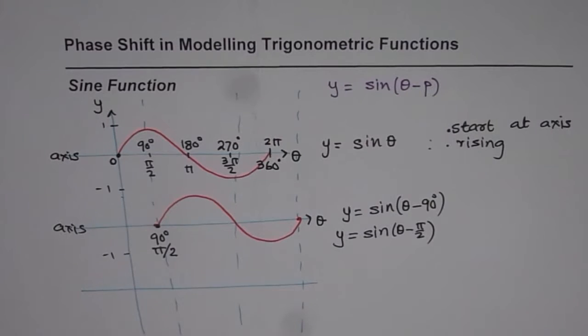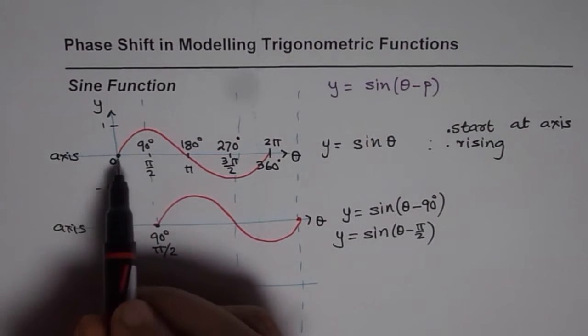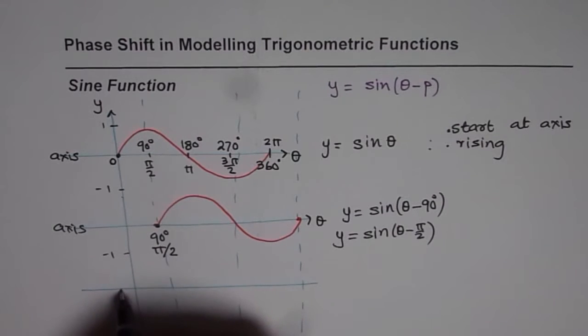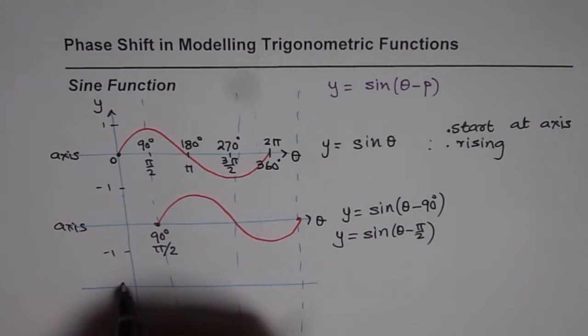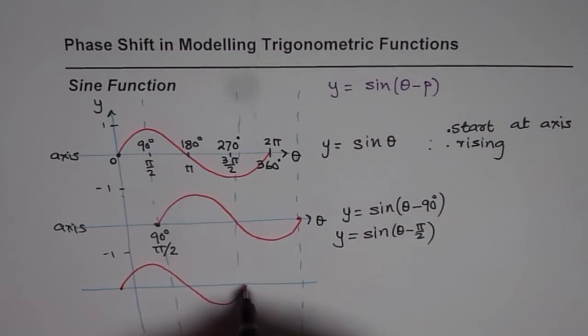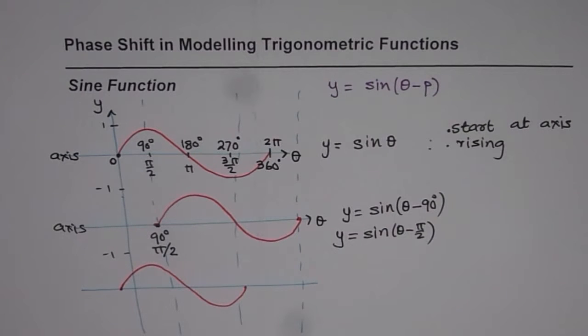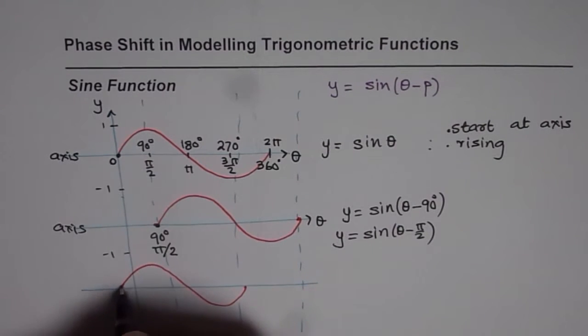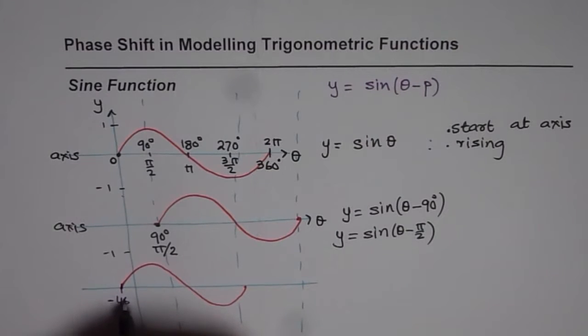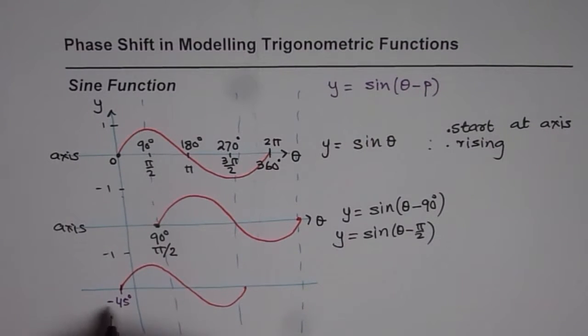The other condition could have been that this starting point was before. For example it could be from somewhere here, so let me just draw one wave here. Again I'm doing a very approximate sketch, kind of like this. And let's say that this point here is -45 degrees. In radians of course this would be -π/4. I'm taking both the units.